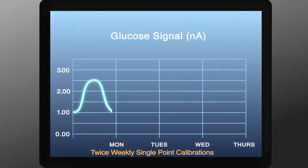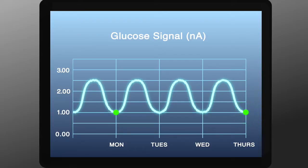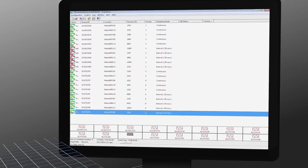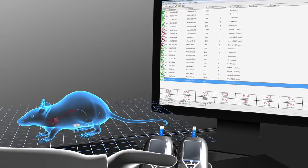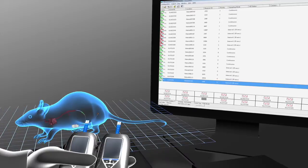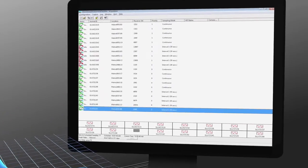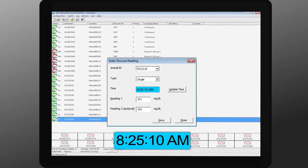Following the initial multi-point calibration, it is important to take twice-weekly single-point reference values at the same time of day when an animal's blood glucose is stable. To take a single-point calibration, draw duplicate blood samples while the animal has a steady blood glucose value. Record the values from the glucometer in DSI software or a spreadsheet.